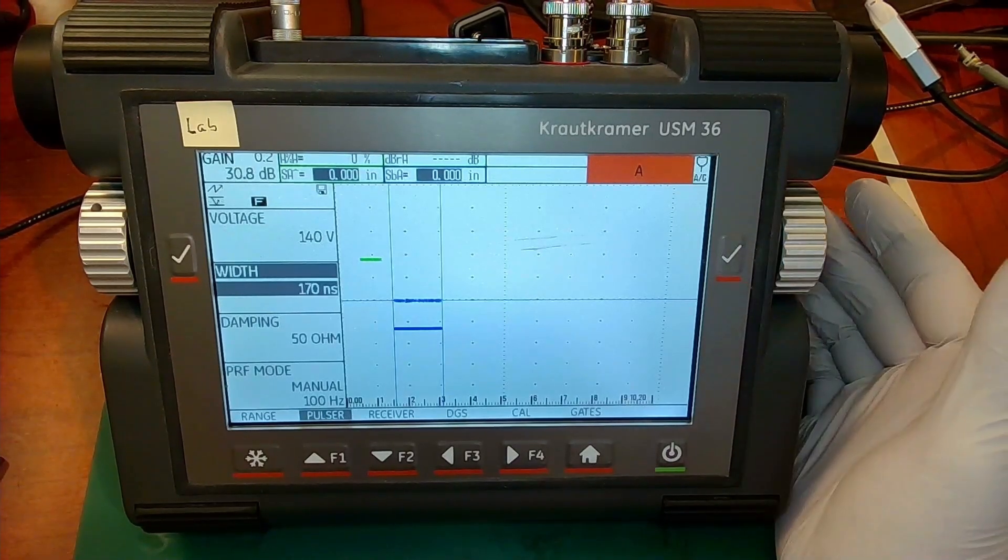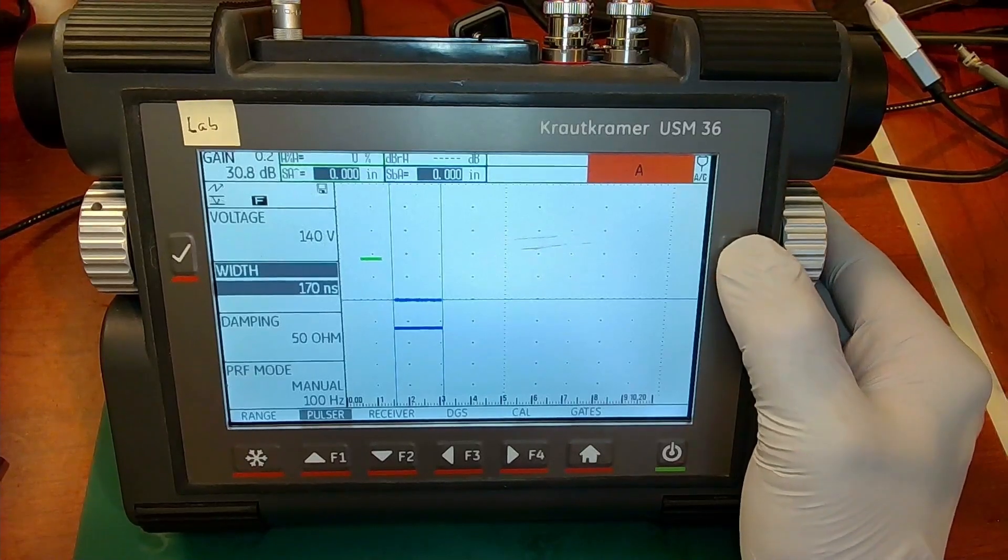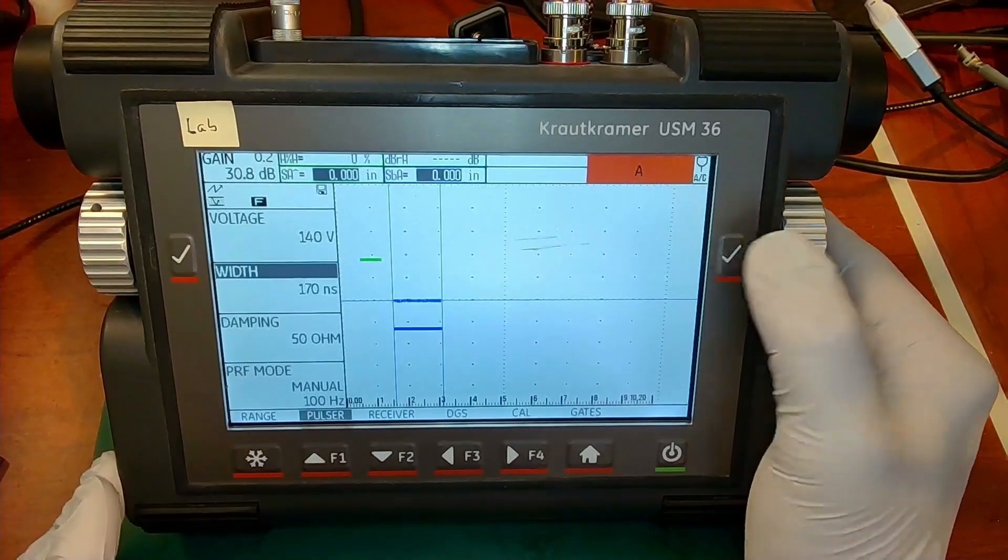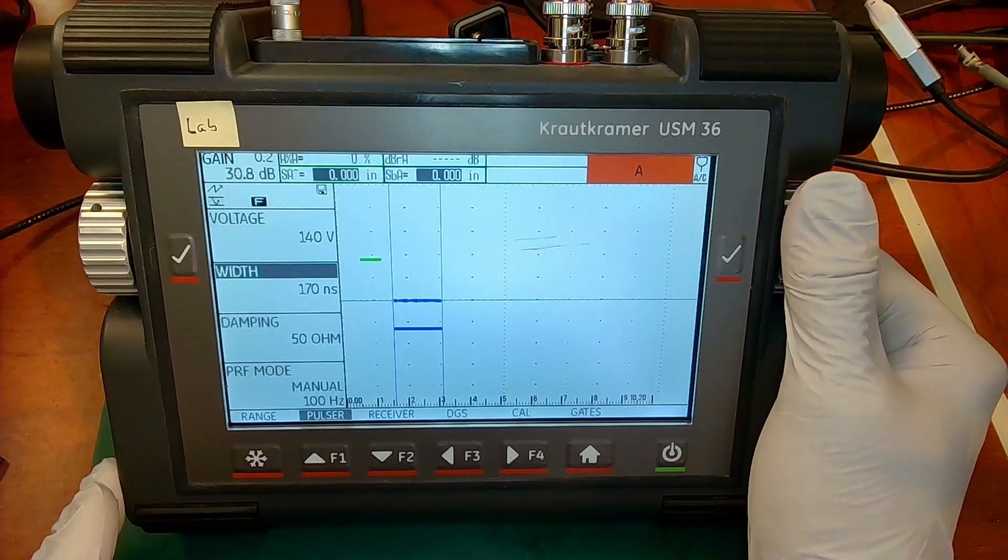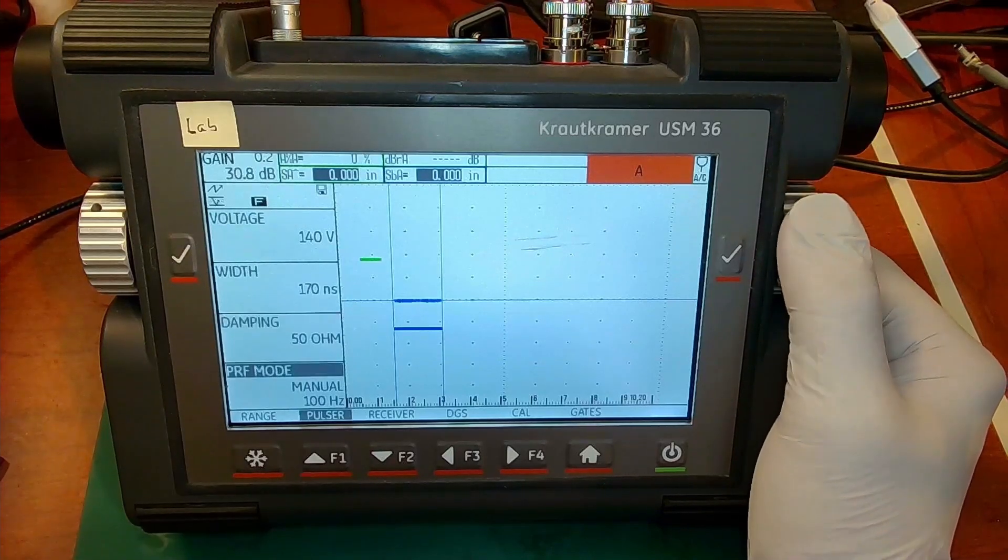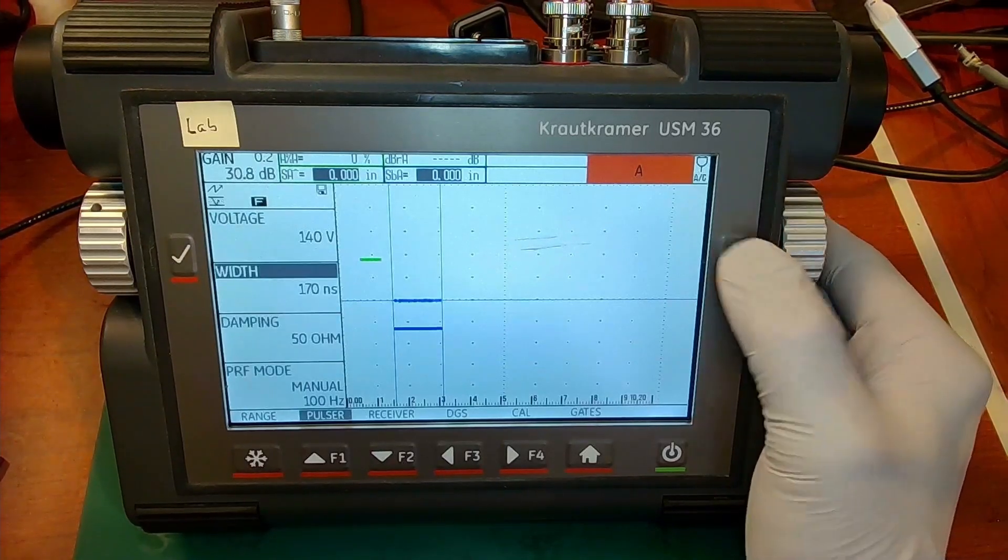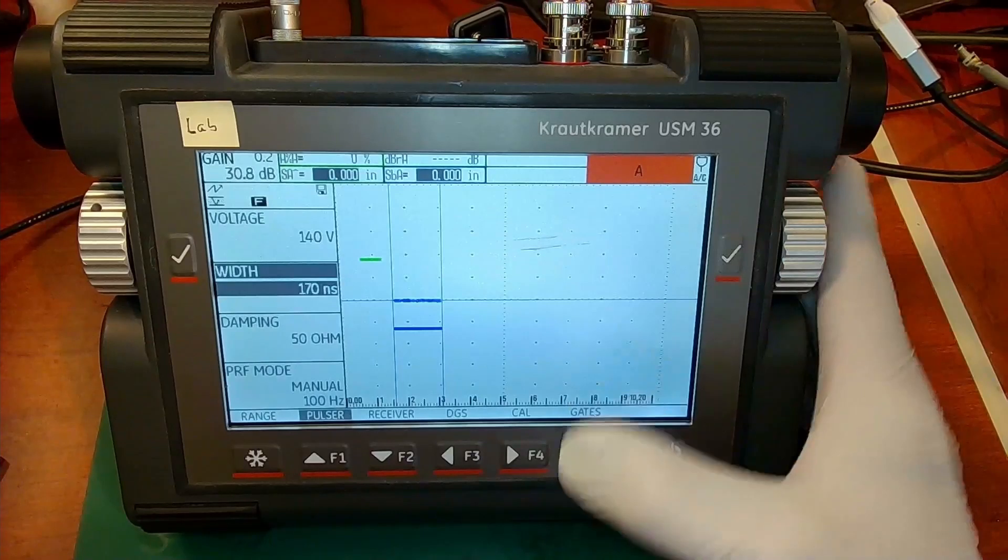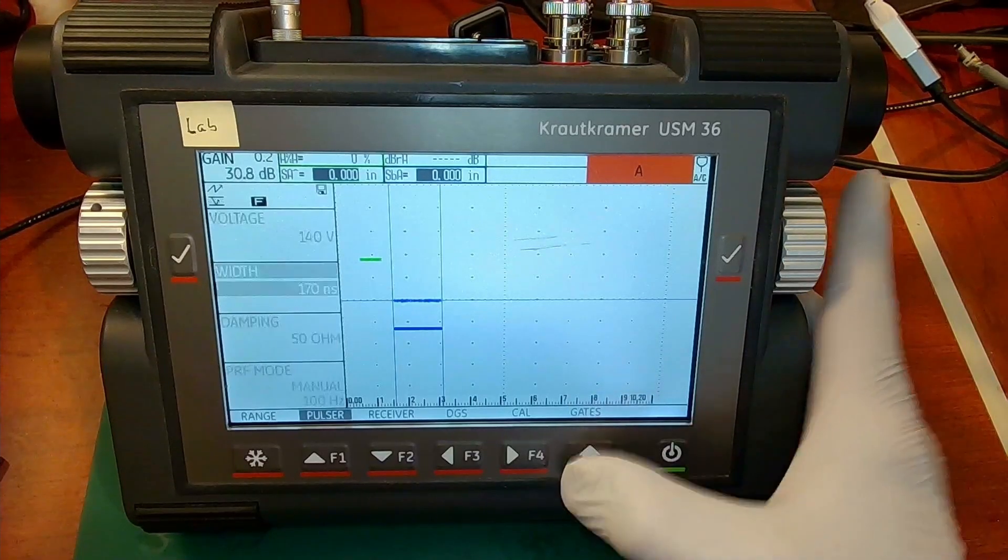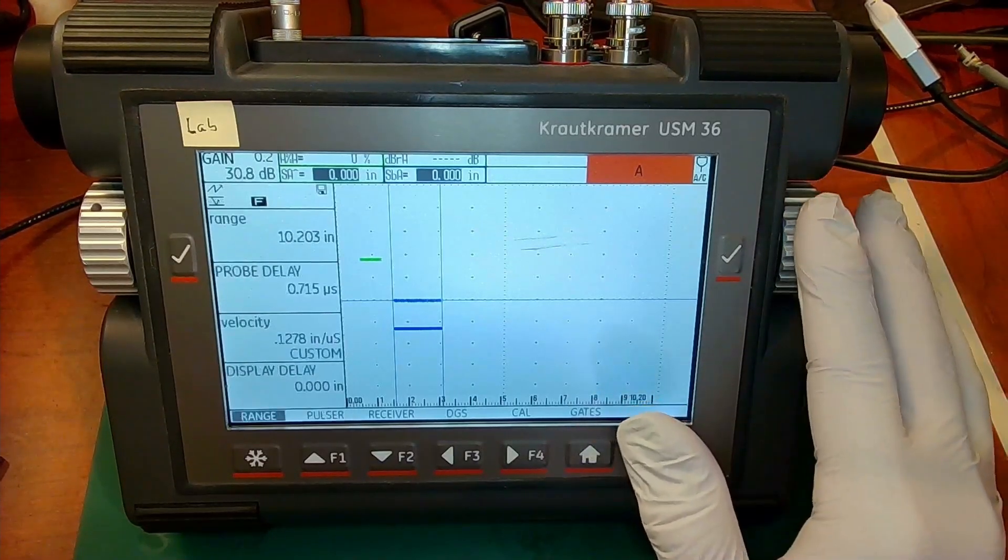And I can change it to my other setting. Now I can either hit the check mark, which accepts that change and gives me control to move to a different parameter. Or even when that is active, I can hit the home button. And that will take me back down to the menu bar.